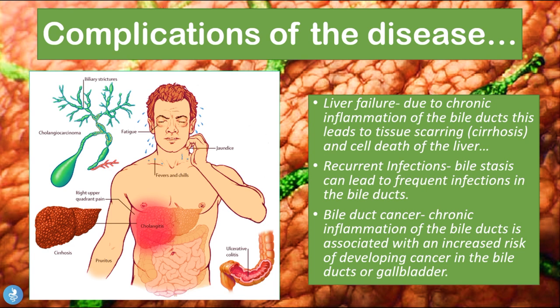Now let's explore some complications of the disease. These patients can suffer liver failure — due to the chronic inflammation of the bile ducts, this leads to tissue scarring, cirrhosis, and cell death of the liver. When all these channels become blocked, they cause the liver to become sick. Once the liver is chronically inflamed, it will start to scar and develop fibrous tissue, and that is how liver failure sets in, resulting in liver cirrhosis.